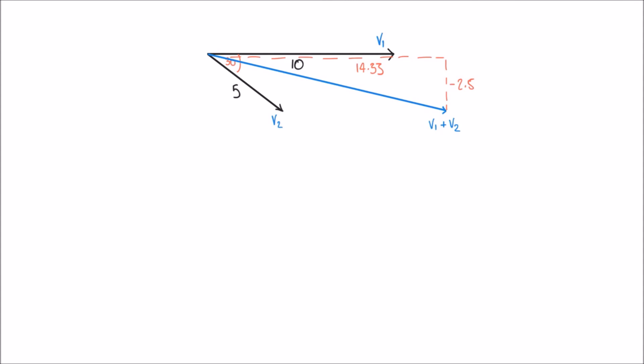We can use these horizontal and vertical components to find the length of V1 plus V2 using Pythagoras's theorem: hypotenuse² = 14.33² + (−2.5)². It's important to remember that squaring a negative number gives a positive result. Calculating 14.33² + 2.5² gives 211.5989, and taking the square root gives us a hypotenuse — the length of the resultant vector — of 14.55.